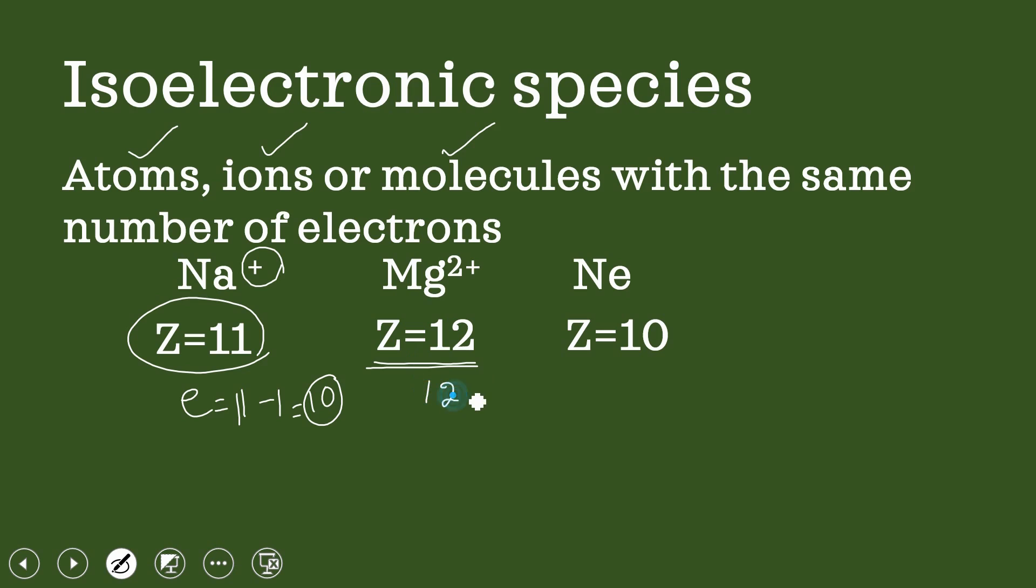Here, atomic number is 12, two electrons are lost in forming two plus ion, so 12 minus 2, this is equal to 10. Here, atomic number is 10. All three species have 10 electrons and we call them isoelectronic. Na+, Mg2+, and neon, these three species are isoelectronic.